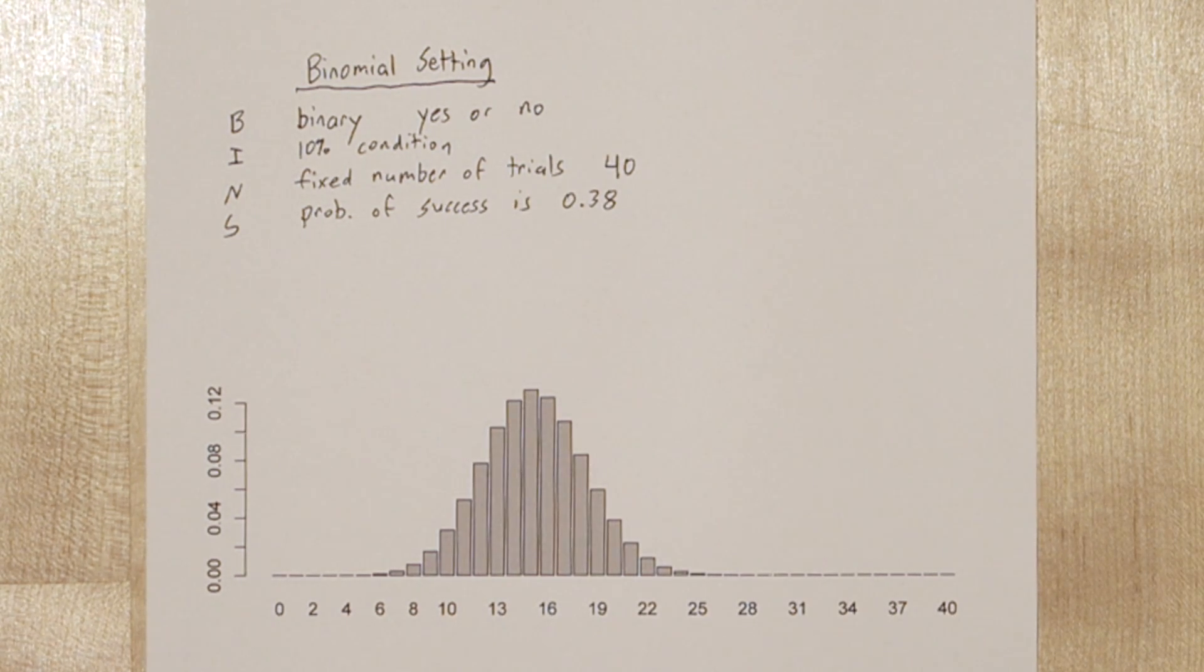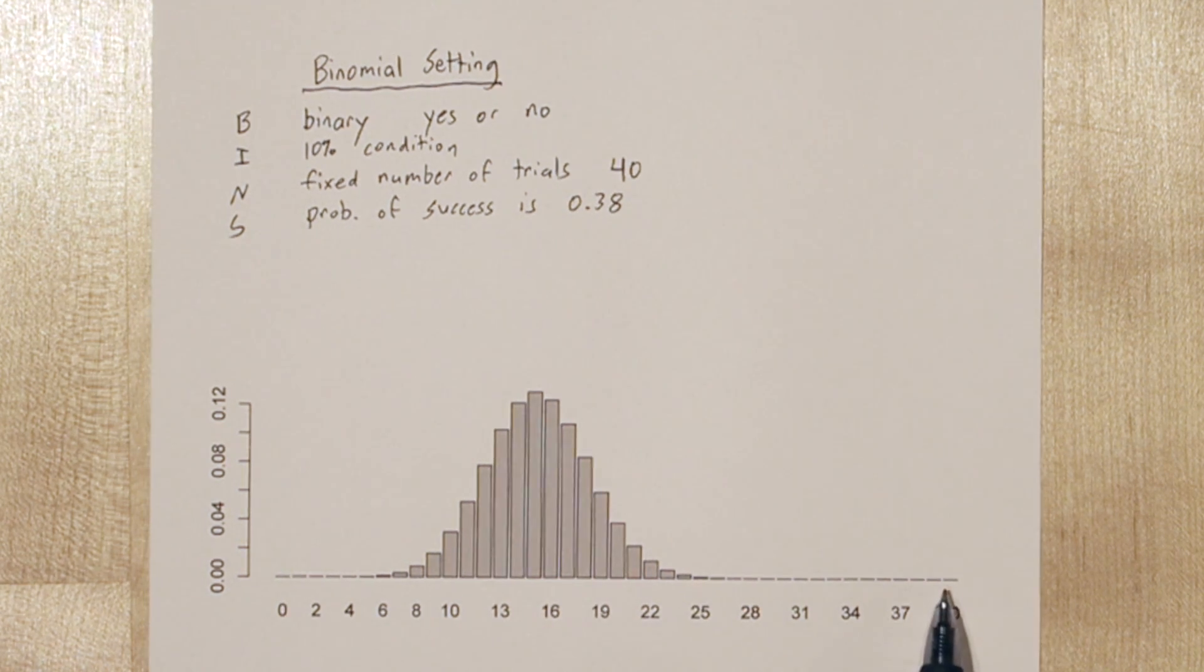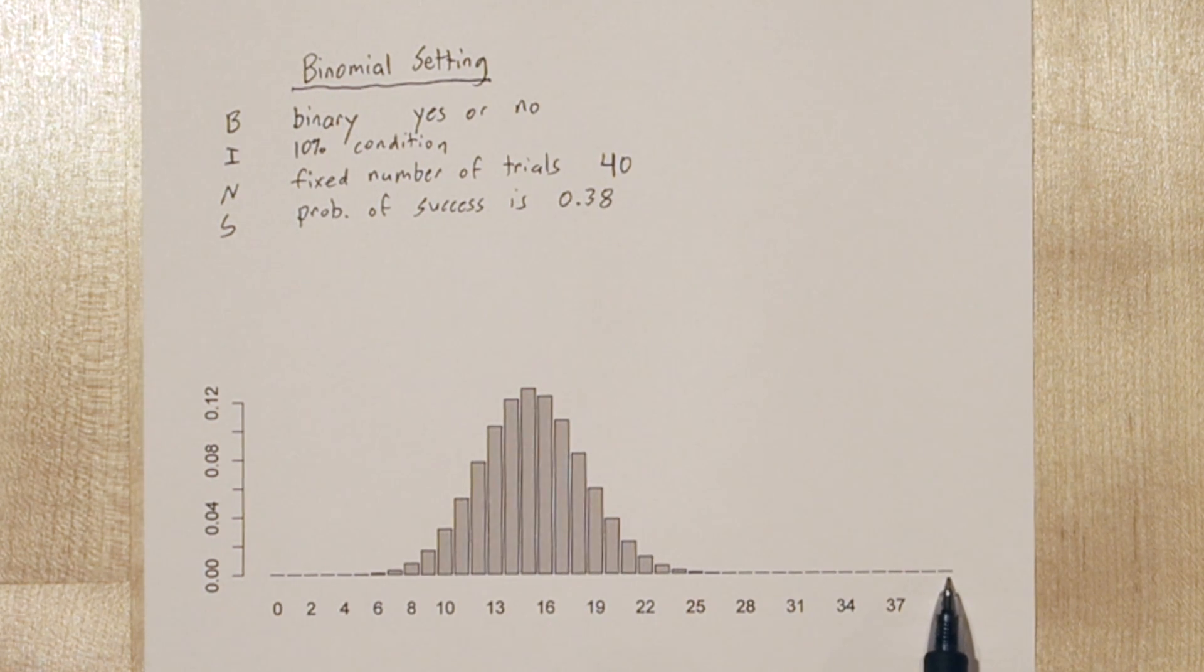So the actual distribution isn't normal. It's discrete and looks like this. So for all 40 to say they want a new mascot is an extremely low probability. It's much more likely to have about 15 people say they want a new mascot. So in a sample of 40, for the majority to want a new mascot, we need 21 or higher.